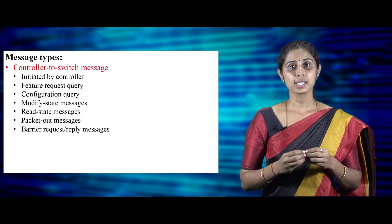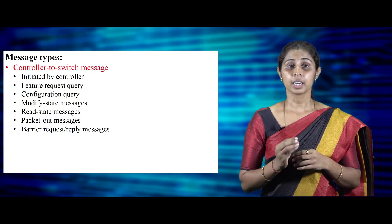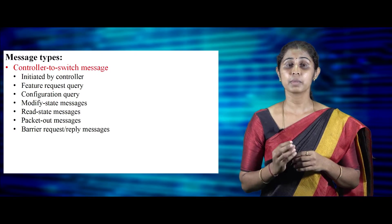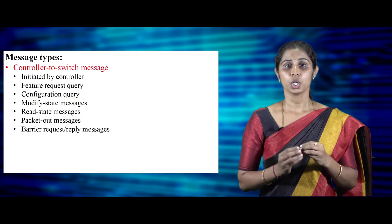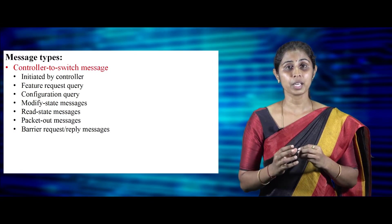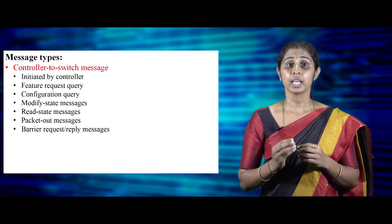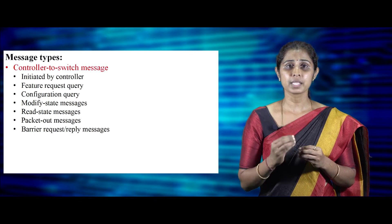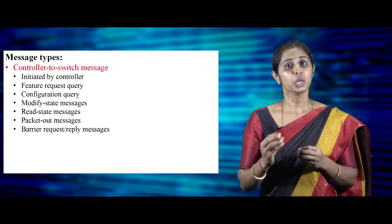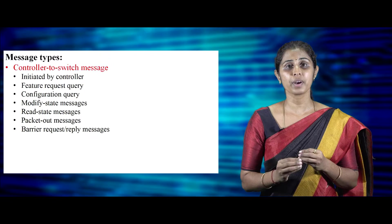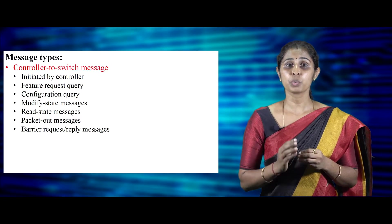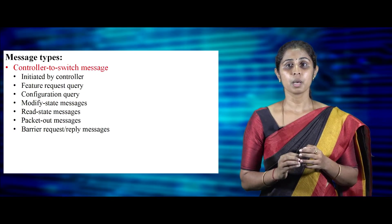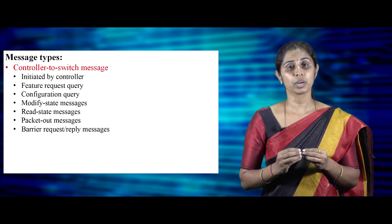The OpenFlow protocol supports three types of messages: controller-to-switch, asynchronous, and symmetric, each with multiple subtypes. Controller-to-switch messages are initiated by the controller to manage or examine the switch state, and the switch may be expected to respond. For example, the controller may send a feature request query, and the switch must reply specifying its capabilities. The controller can also send configuration query, modify state, read state, packet out, and barrier request or reply messages to the switch.